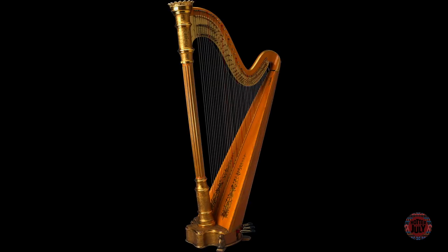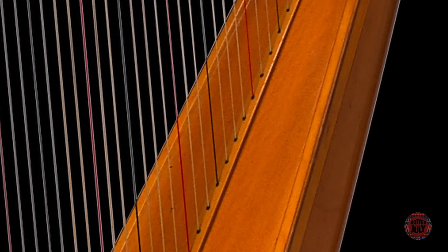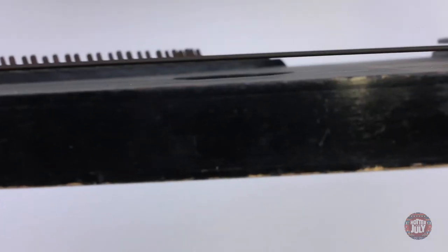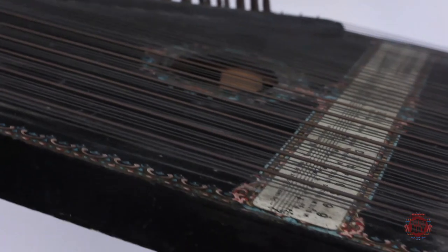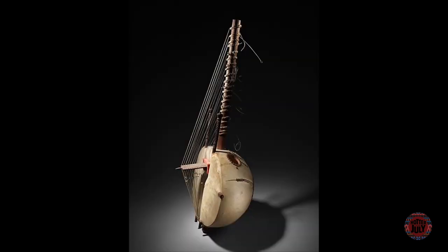Harps are instruments with many strings running at an angle to the soundboard, in contrast to the zither whose strings typically run parallel to the soundboard. What's a soundboard? Keep watching and you'll soon find out. Examples of harps include the Celtic harp, concert harp and kora.